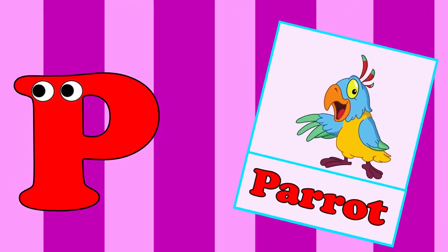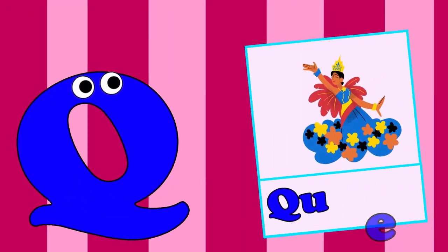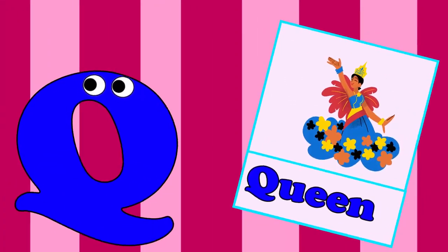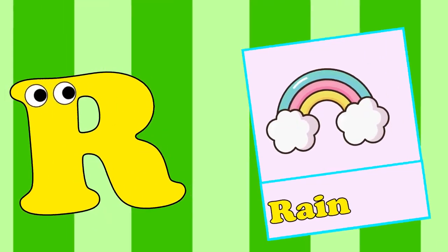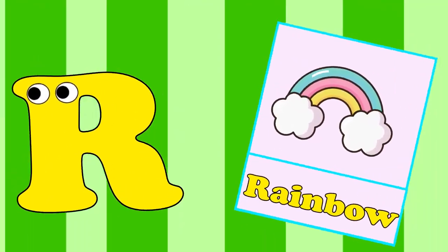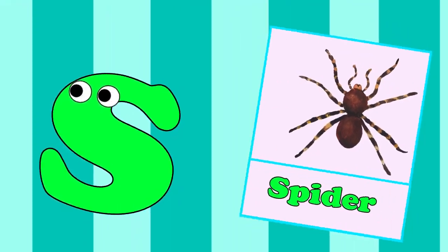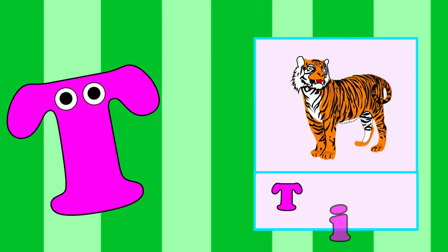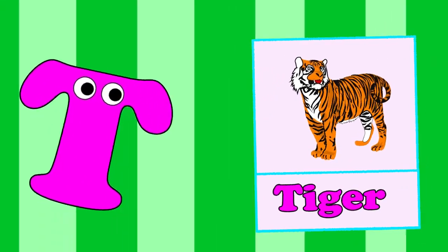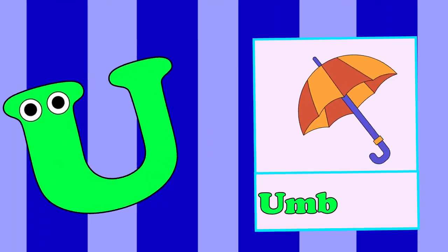P is for Parrot. Pa, Pa. Parrot. Q is for Queen. Queen. R is for Rainbow. R, R. Rainbow. S is for Spider. Spider. T is for Tiger. T, T. Tiger.